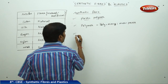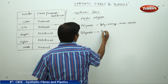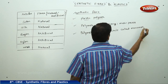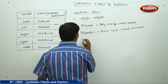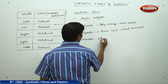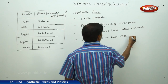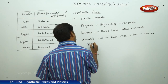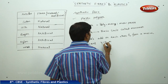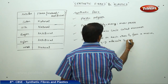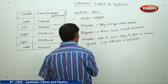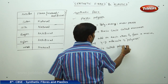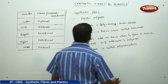A polymer is made of a basic unit called a monomer. Monomers add on to each other to form a macromolecule — a giant three-dimensional molecule — resulting in the formation of a polymer. The process is called polymerization.